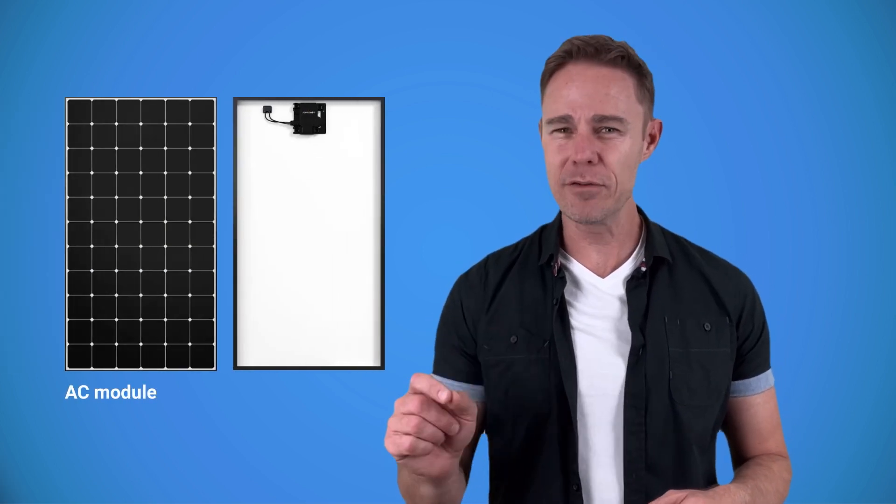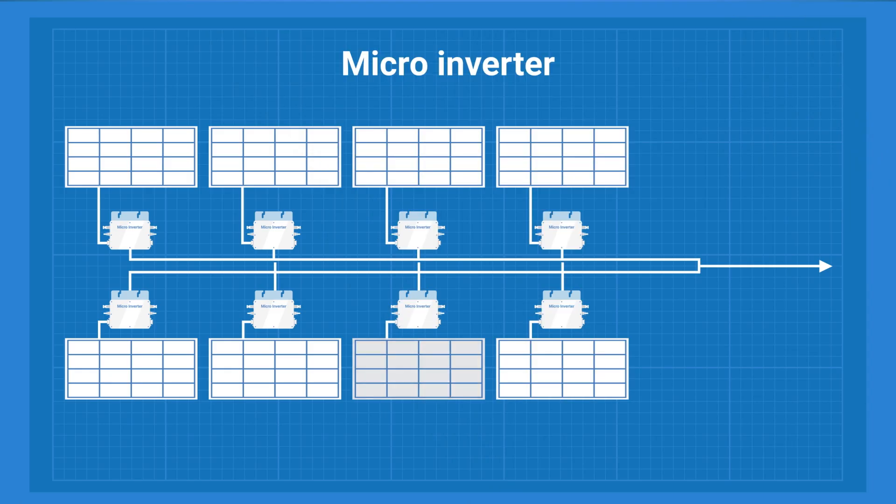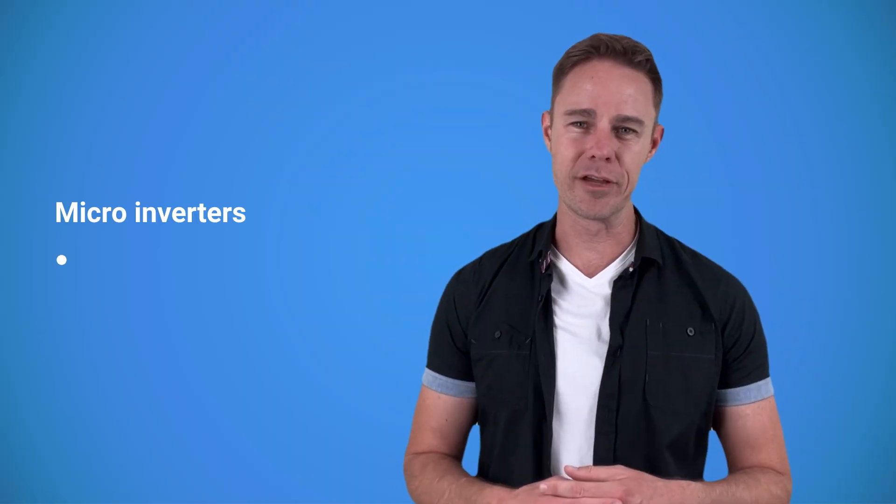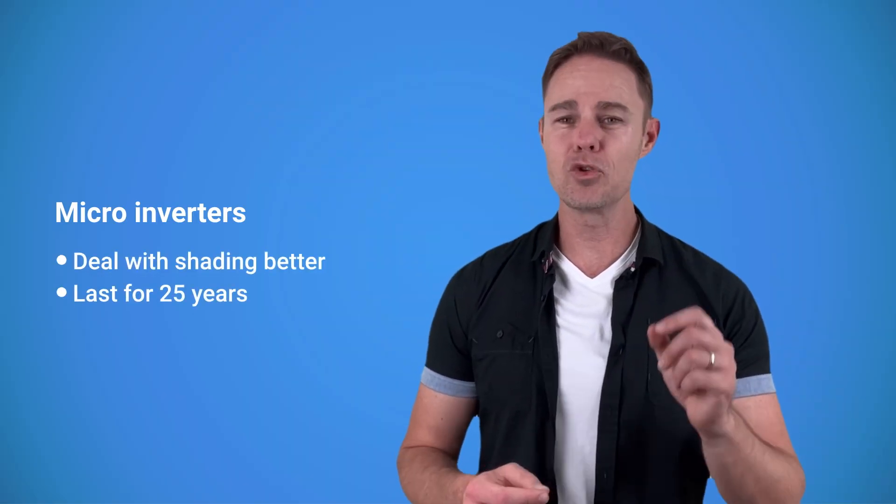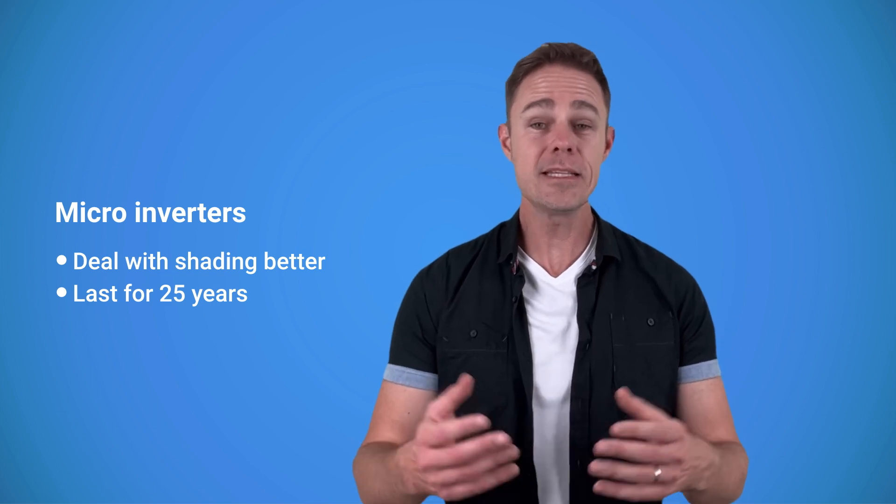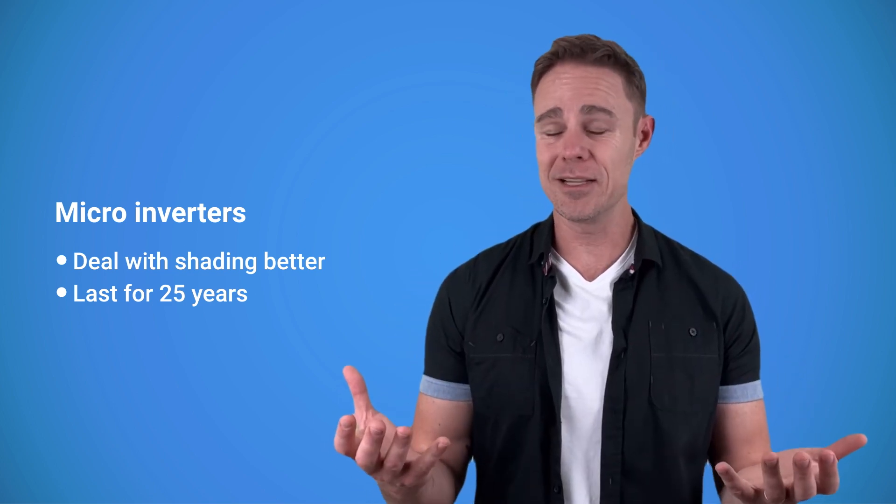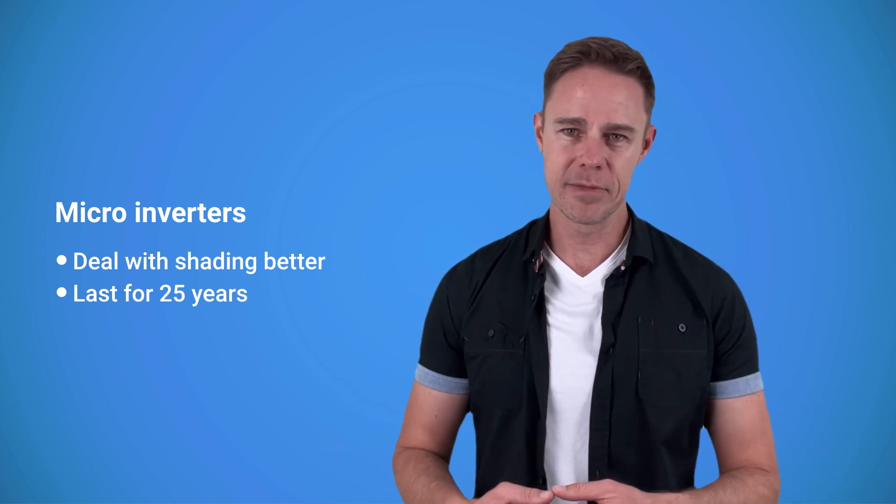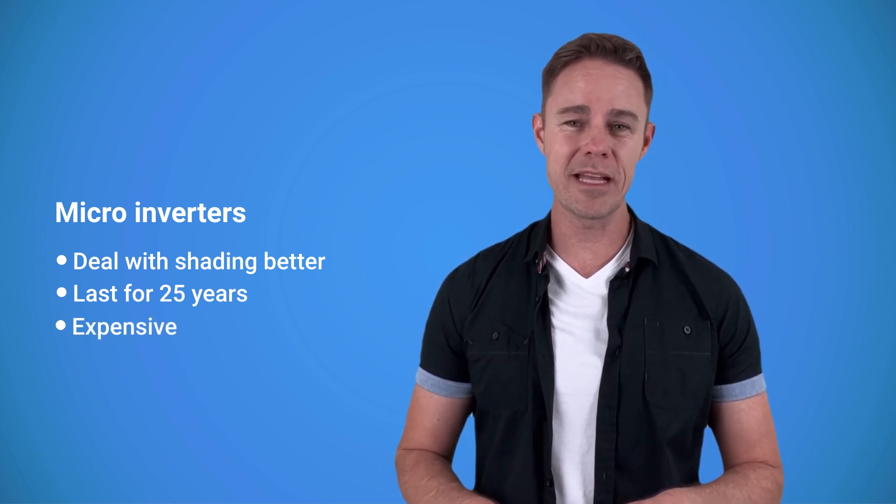There are panels that come with pre-installed micro inverters - these are called AC modules. Since each panel has its own inverter, shading of one module doesn't affect the others. Micro inverters are more efficient compared to string inverters and can last for up to 25 years, basically as long as the panel itself.